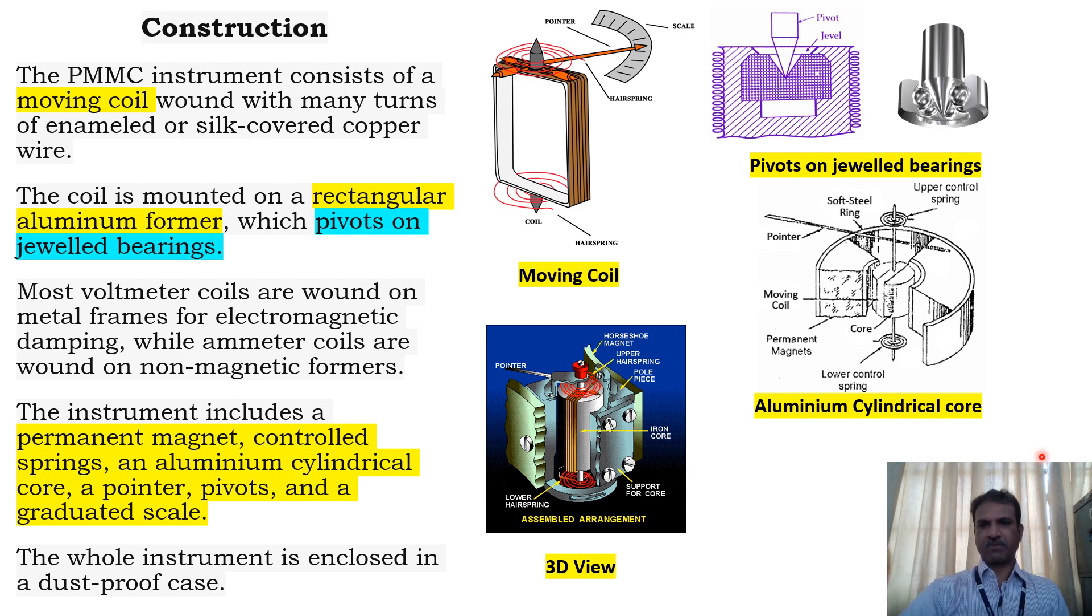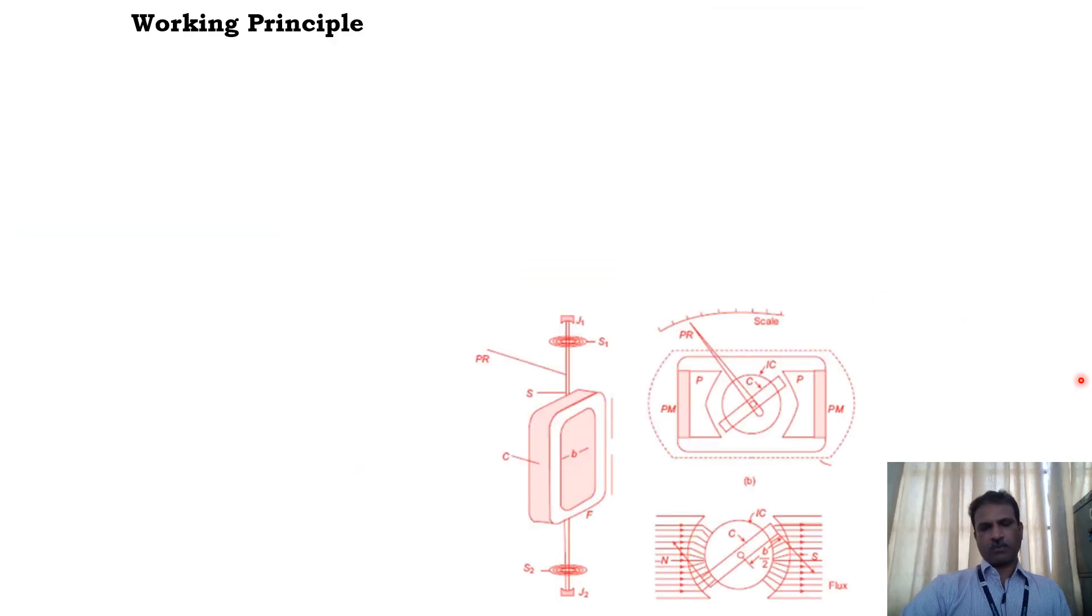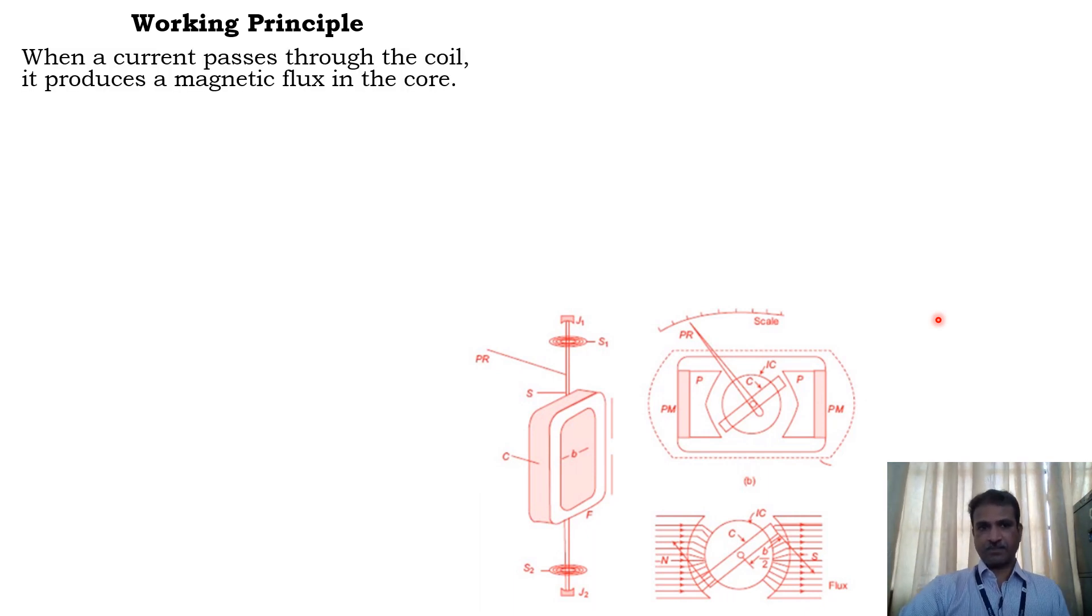Next we will see the working of a PMMC instrument. Here you can see the former, the coil, the spindle, the two springs which are suspended in between the permanent magnet. Let's see the working. It is similar to a DC motor electromagnetic induction.